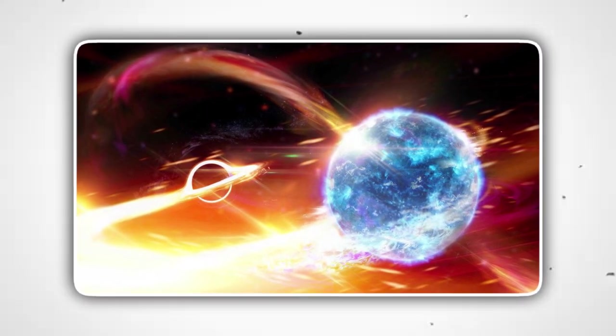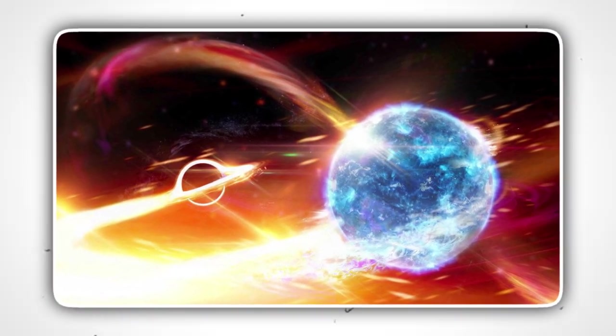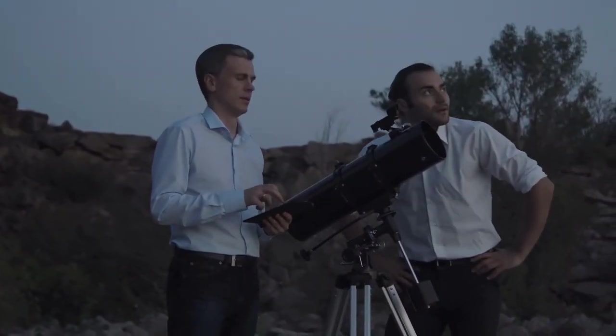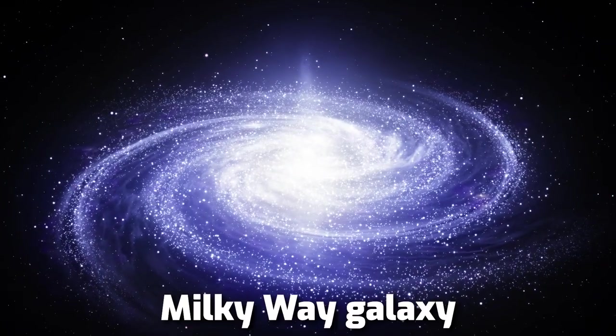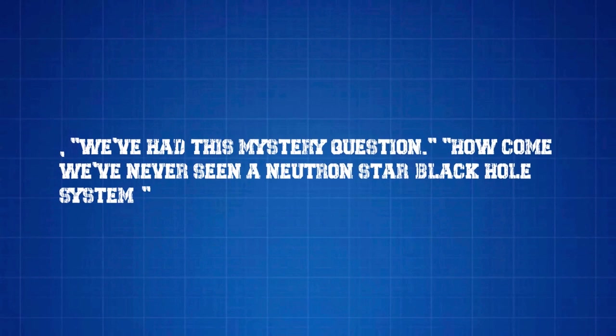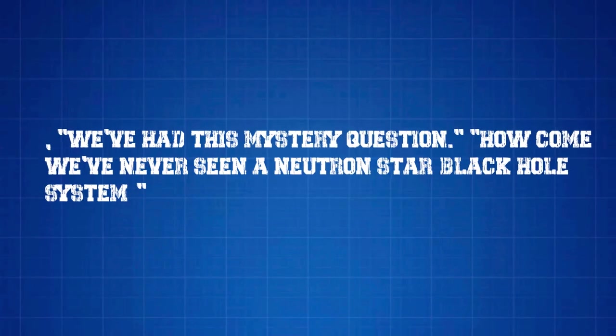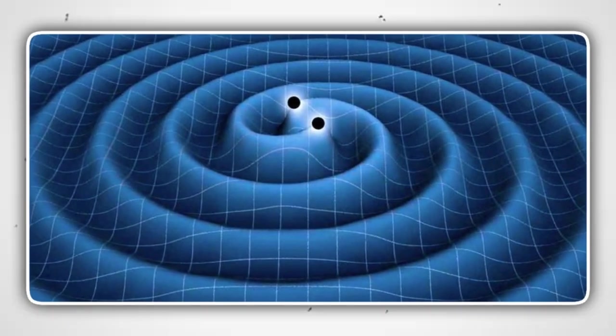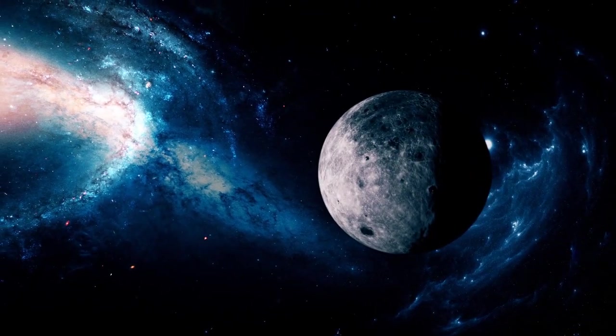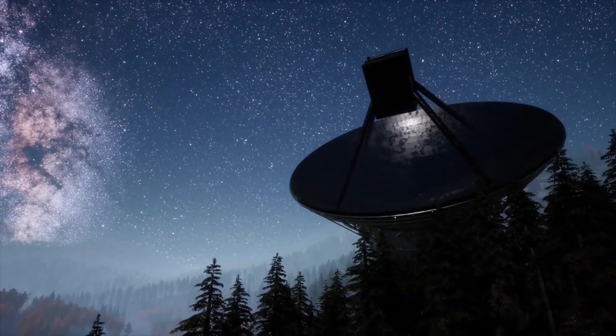Astronomers had long expected to find a neutron star orbiting a black hole, but they had never found one in nearly half a century of searching our Milky Way galaxy. In effect, Dr. Brady explained, we've had this mystery question: how come we've never seen a neutron star black hole system? Two gravitational wave detections in 2019 appear to have finally captured this elusive astronomical quarry.